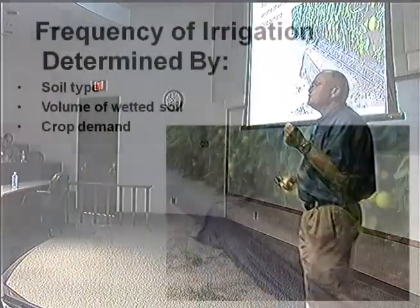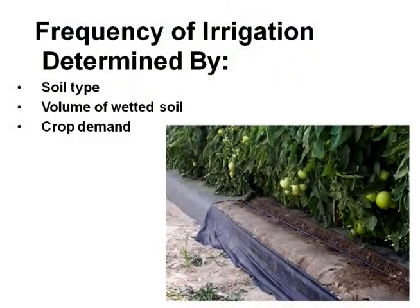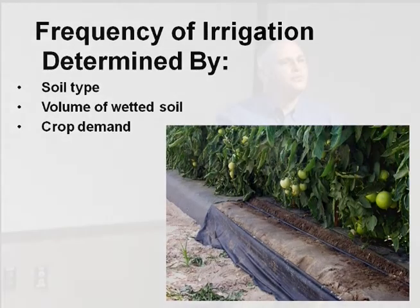The frequency of watering is determined by the soil type, volume of wetted soil, and the crop demand. Clay soil or sandy soil — which one holds the most moisture? Clay. Would we need to water a sandy soil more because it holds less? Usually we do. And the volume of wetted soil has a determination on frequency — the more water we can store in that preferred zone, the longer we can go between irrigations.